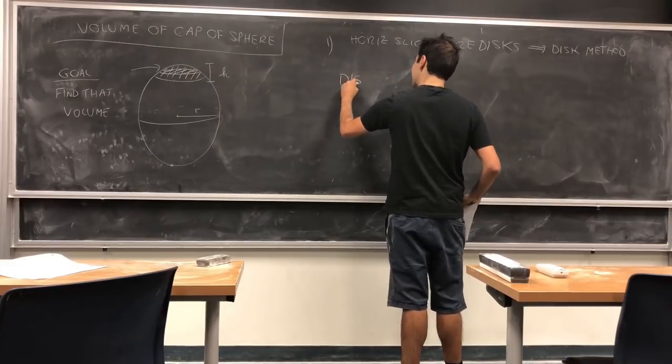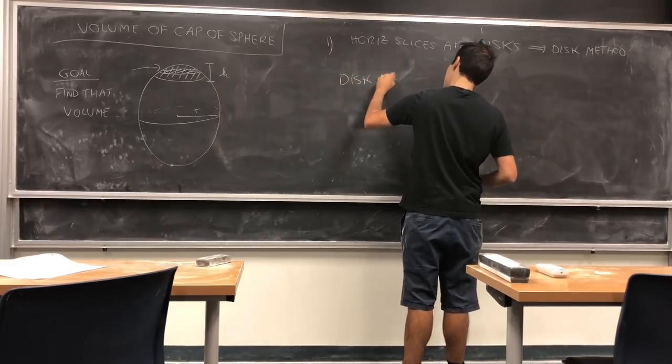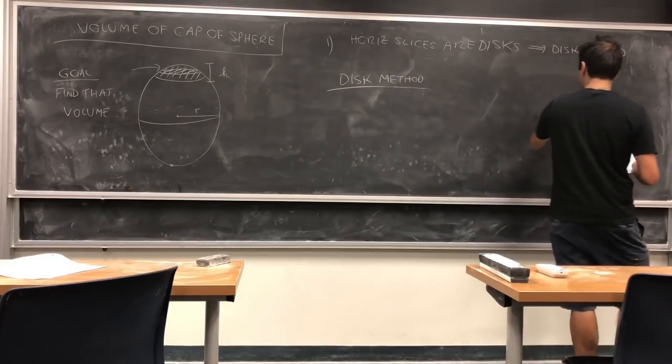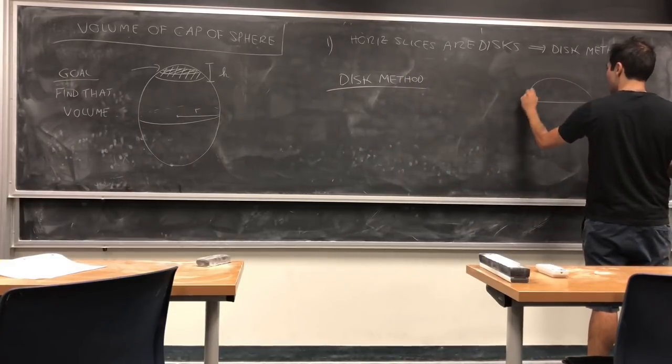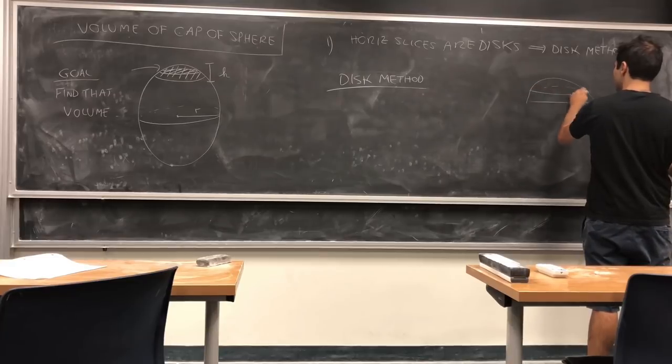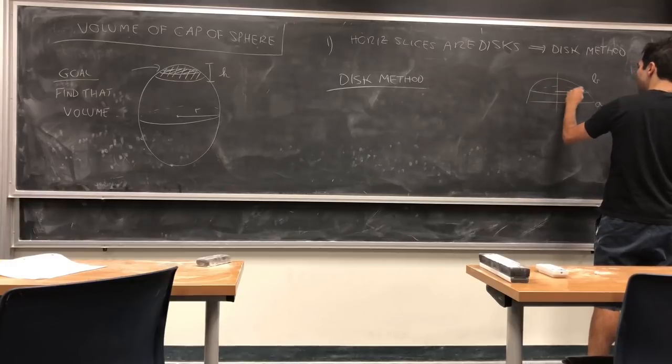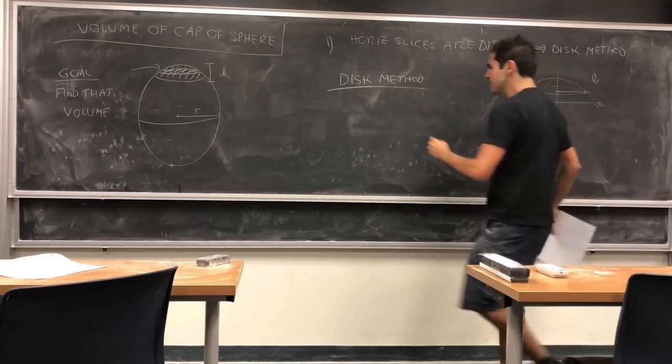What does the disc method say? Namely, suppose again you have this cap and the cap goes from a to b, then the volume is just the integral from a to b of the area of this disc.